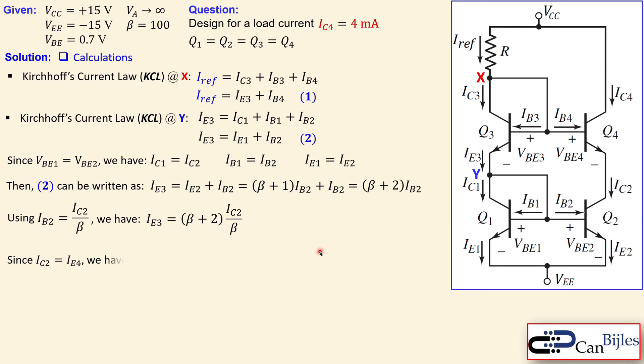Since IC2 equals IE4, because IC2 is the collector current of Q2 and the emitter current of Q4 flows in the same branch, they must be exactly the same. Let's designate this equation number three. IE3 is then equal to (β + 2)/β times IE4. Since IE4 is given as (β + 1) times IB4, let's designate this equation number four.